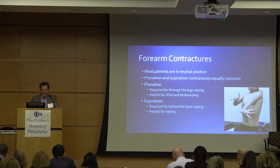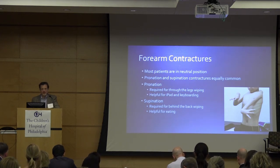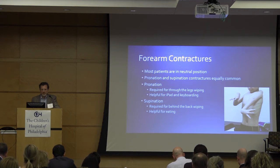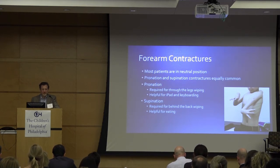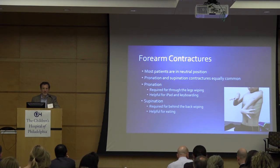Forearm contractures — contrary to what's commonly written, most patients I find are in neutral position. Pronation and supination contractures are about equally common. Pronation is required for through-the-legs wiping and is helpful for iPad and keyboarding. Supination is required for behind-the-back wiping and is helpful for eating, especially if they don't have adequate elbow flexion and require supination and wrist flexion to reach the mouth.